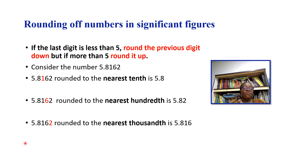If we round 5.8162 to the nearest thousandth (3 decimal places), we look at the fourth decimal digit, which is 2 — less than 5 — so we discard it. The answer is 5.816.